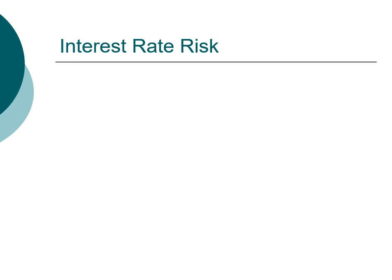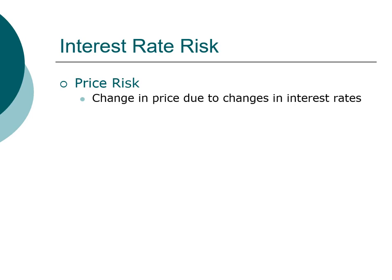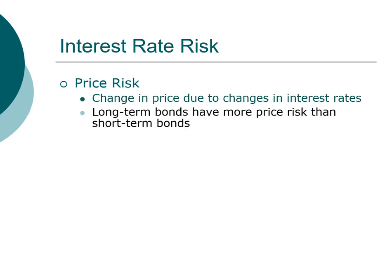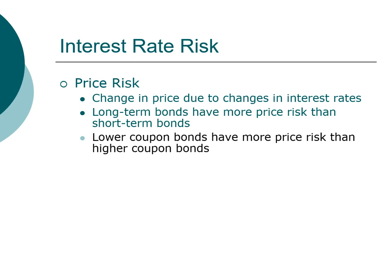In addition to the passage of time, the single greatest factor that affects bond prices is due to changes in interest rate. Interest rate risk refers to the impact on bond prices when interest rate increases, sometimes also called price risk. The theory of interest rate risk suggests that bonds with longer term to maturity carry a higher price risk than bonds with shorter term to maturity. Also, bonds that have a lower coupon rate have a greater price risk than those with a higher coupon rate.